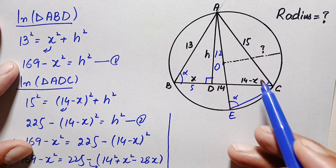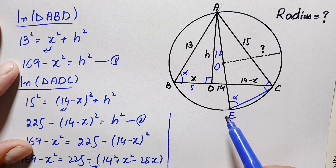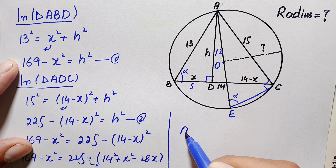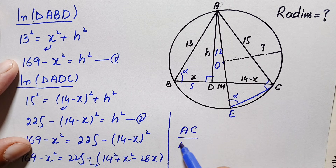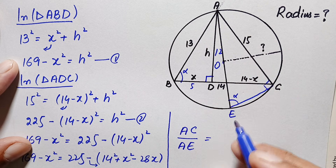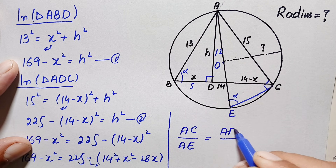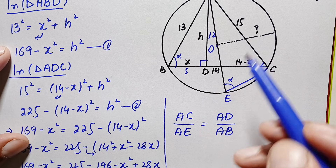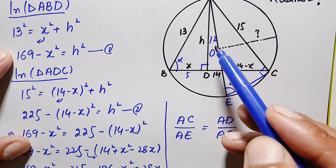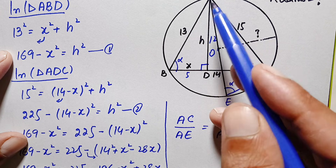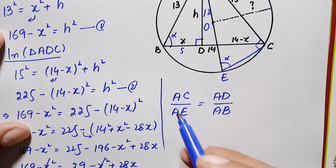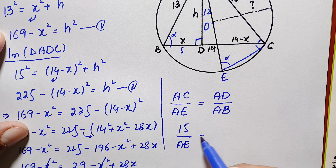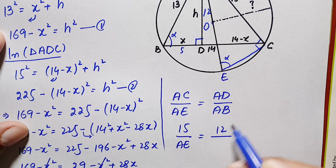In similar triangles, the ratio of any two sides of one triangle is proportional to the corresponding sides of the second triangle. We take the ratio of perpendicular to hypotenuse for both triangles. In triangle AEC, perpendicular is AC and hypotenuse is AE. In triangle ABD, perpendicular is AD and hypotenuse is AB. So: AC divided by AE equals AD divided by AB.